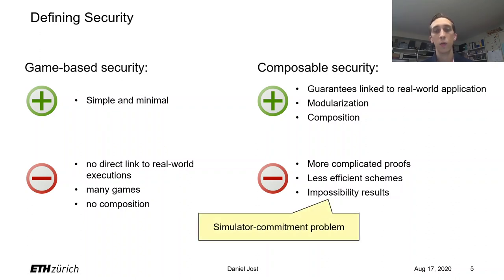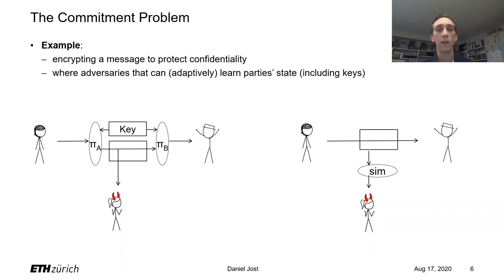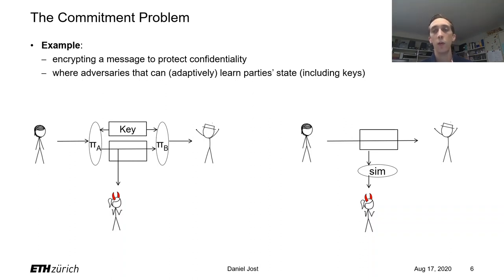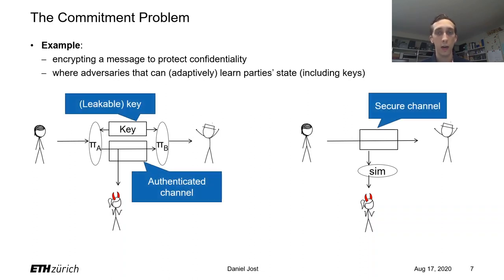A large class of such impossibility results is caused by the so-called simulator commitment problem. Let's consider an example: Alice wants to confidentially send a message to Bob, so she might use a symmetric encryption scheme. In a composable security notion we would compare the real-world execution to Alice and Bob using an idealized resource such as a secure channel. The commitment problem appears whenever we assume the shared symmetric key might not just be secure but may at some point leak to Eve.